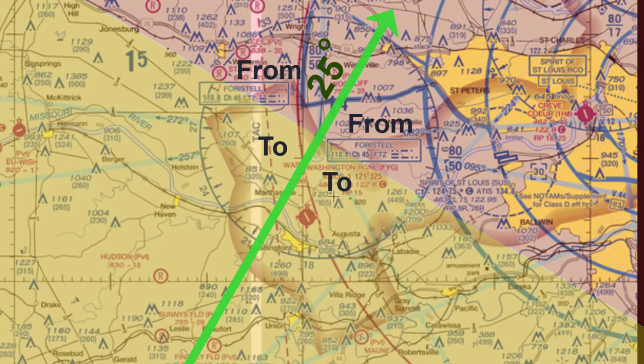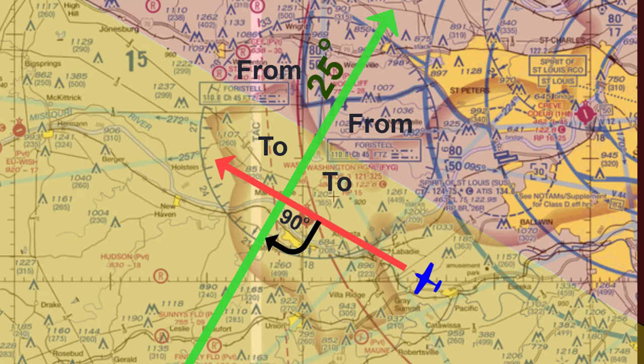The FROM side of the radial is outlined in a faded red color. We have already taken off from KSUS, or the Spirit of St. Louis Airport, and are heading west and plan to cross at a 90-degree angle to the radial. This means we are going to head west at 295 degrees. We will fly in calm winds to keep things simple for now, so we will not adjust the heading for winds, which normally could cause us to drift off course.